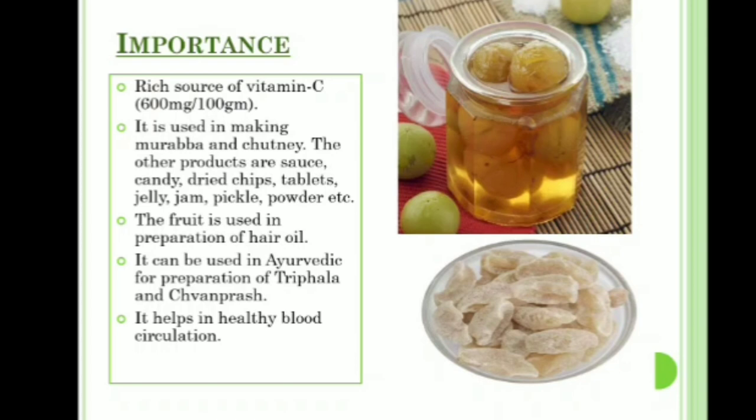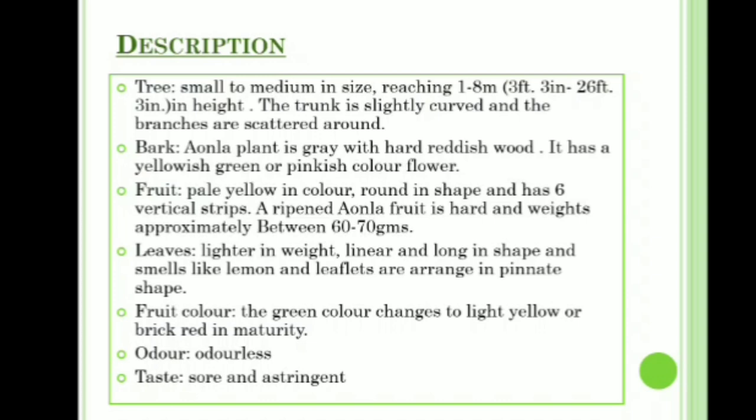Description: the tree ranges from small to medium in size, reaching 1 to 8 meters (3 feet 3 inches to 26 feet 3 inches) in height. The trunk is slightly curved and the branches are scattered around. The bark of the Amla plant is gray with hard reddish wood.